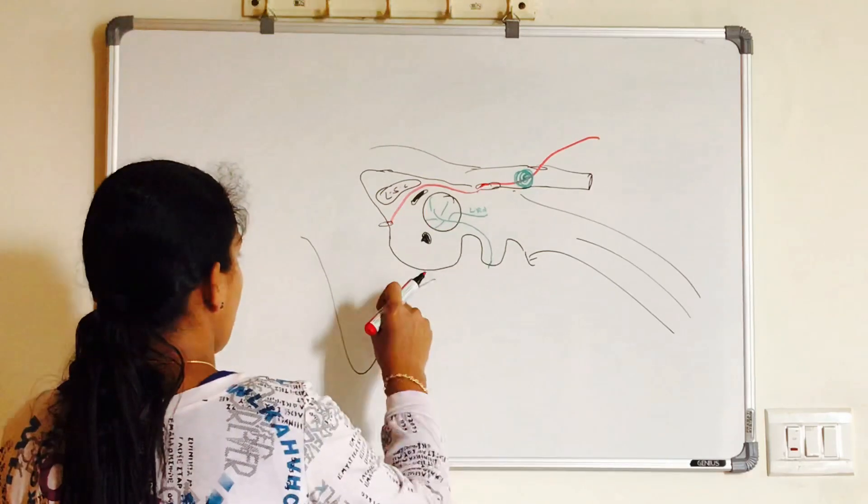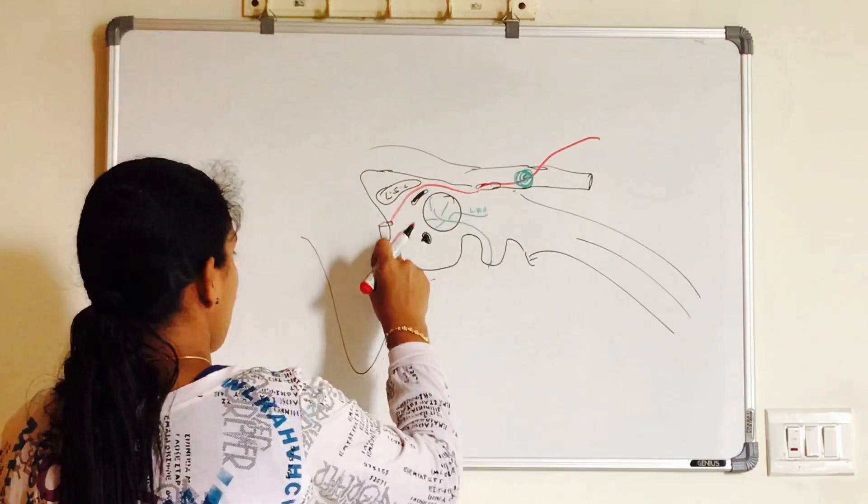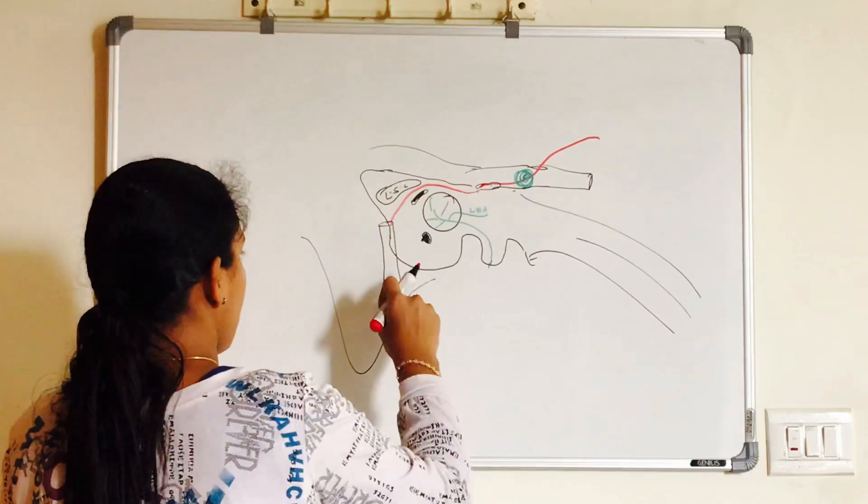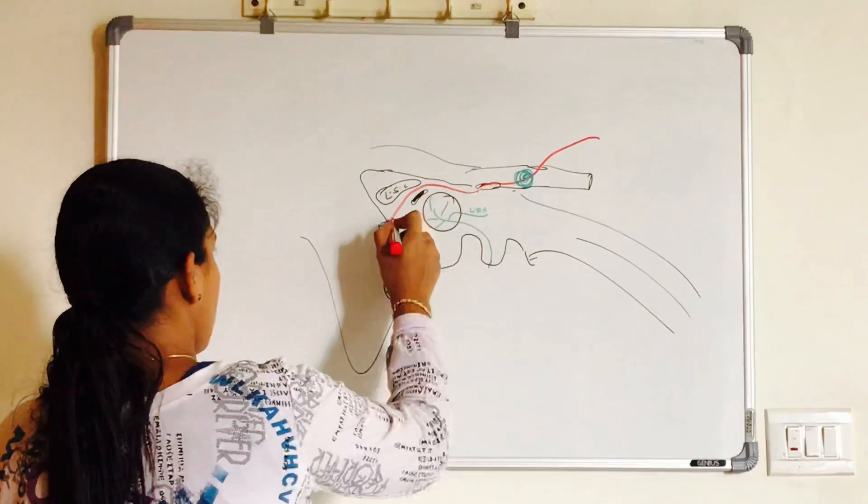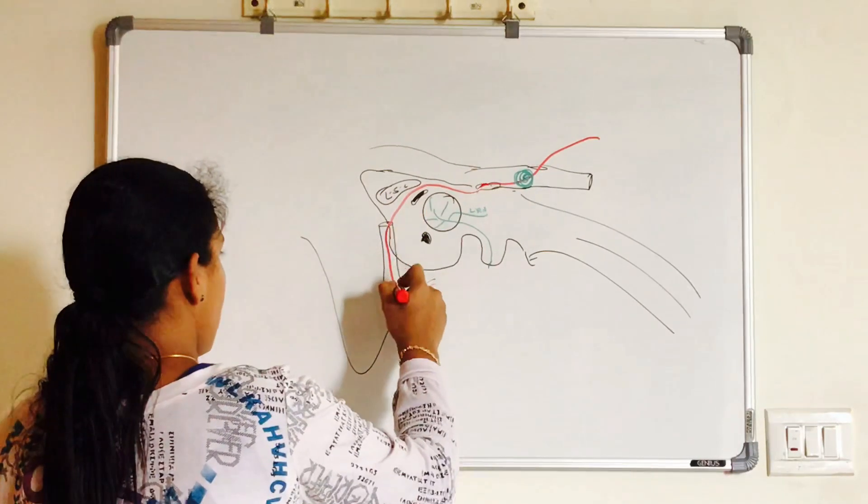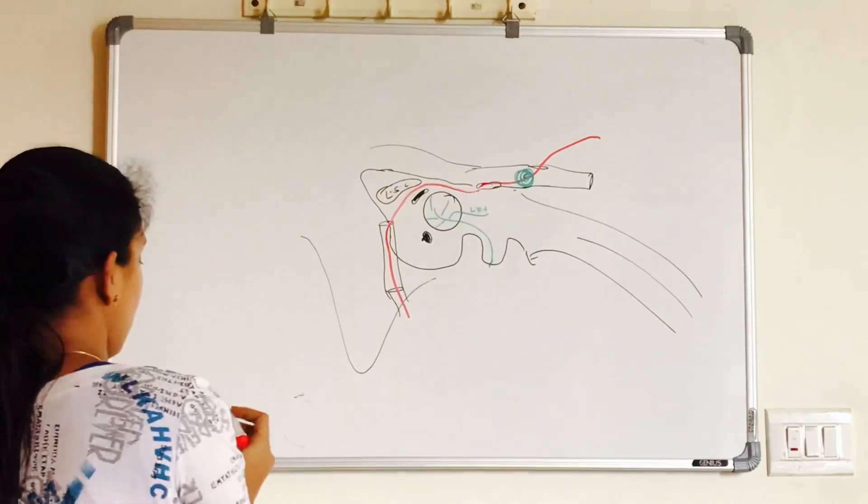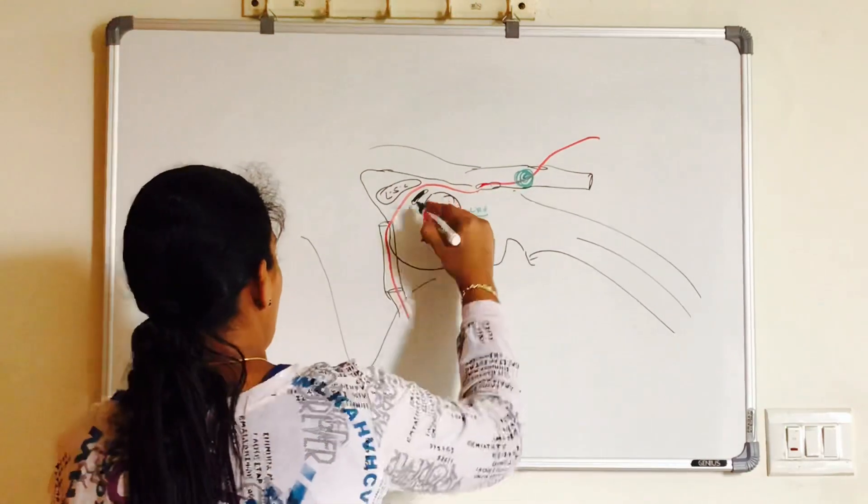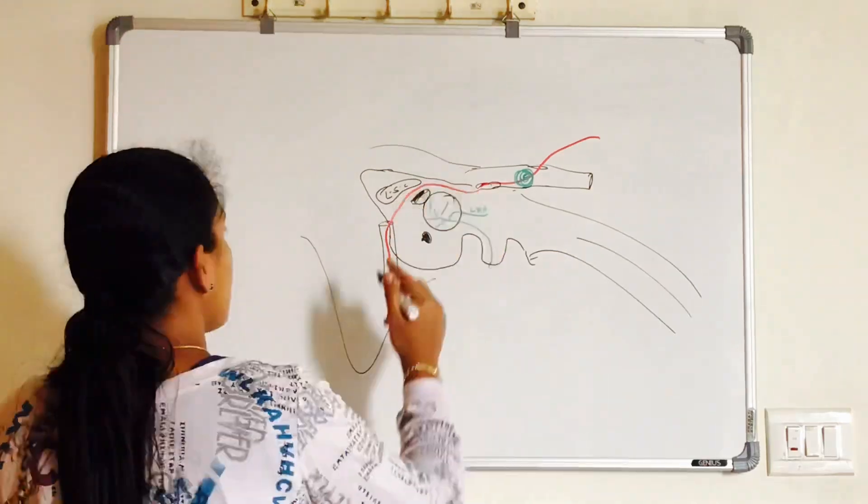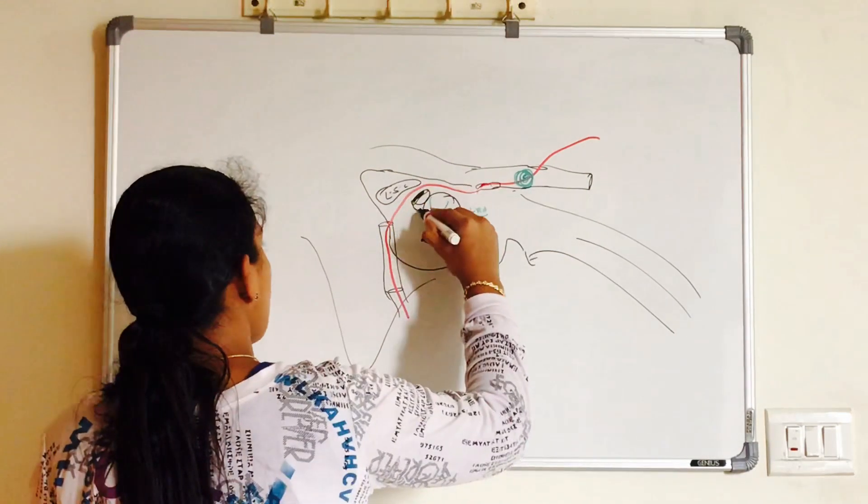Next, the nerve turns to the posterior wall of middle ear cavity to emerge out of the stylomastoid foramen. And here you can see the nerve runs vertically downwards in the posterior wall out of stylomastoid foramen.